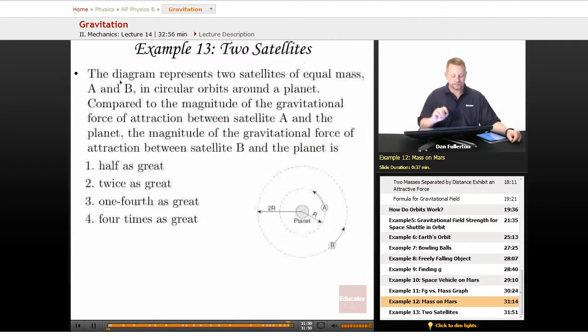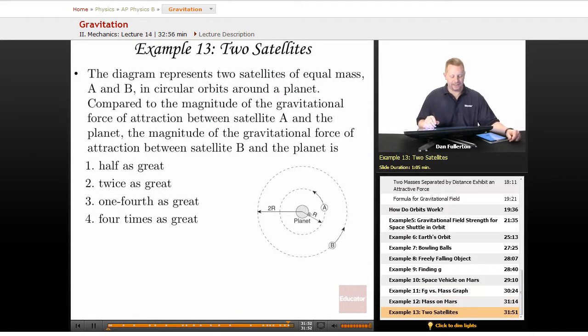One more. Here we have two satellites. The diagram shows the two satellites, both of equal mass, A and B, in circular orbits around a planet here. Compare the magnitude of the gravitational force of attraction between A and the planet to the magnitude of the gravitational force of attraction between B and the planet.